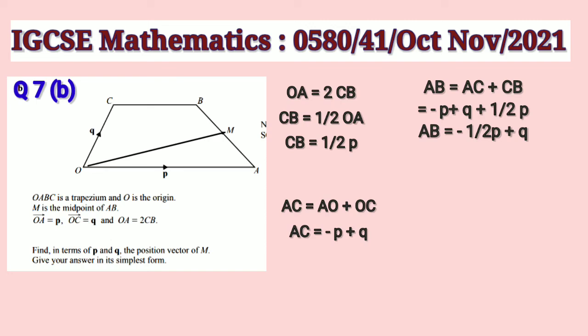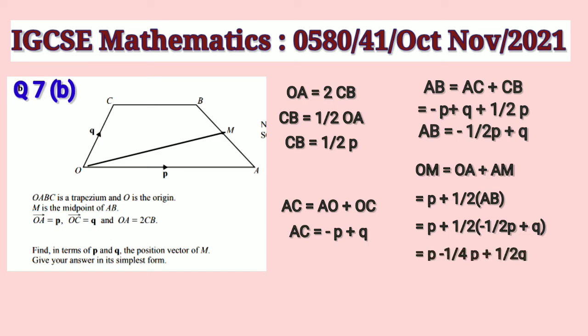Let us now find OM. OM is equal to OA plus AM. We have OA which is P and AM is half of AB.